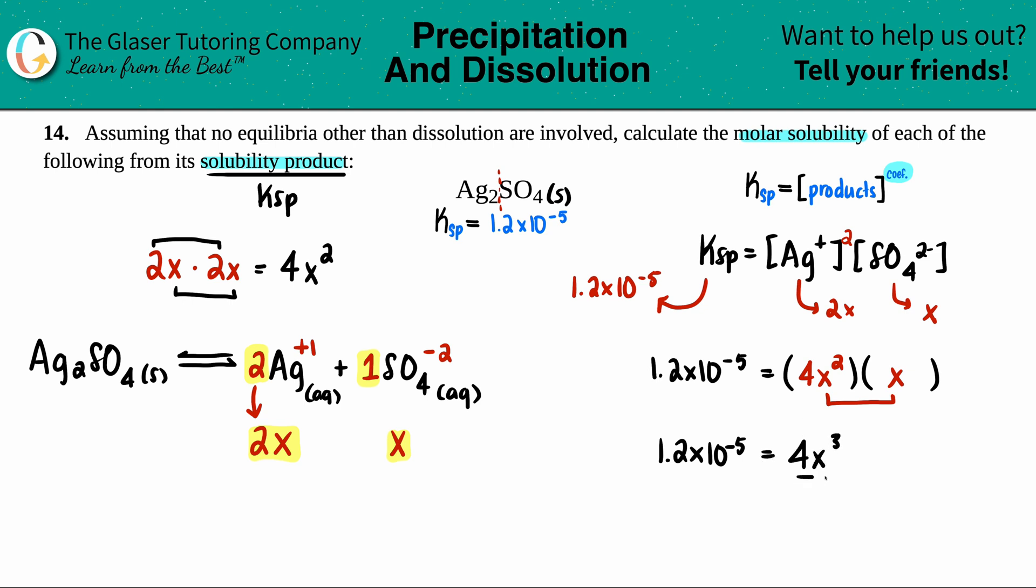And now we're just back to algebra. Divide by 4. You want to get x by itself. So calc is out. 1.2 times 10 to the negative fifth divided by 4 is 3 times 10 to the negative 6. And that equals x cubed. So you can do the cubed root. That's the inverse of cubing. Or the same thing is just flipping this exponent. Remember, this is 3 over 1. So if I raise this whole thing to the 1 over 3, this will cancel. And you're just left with x.